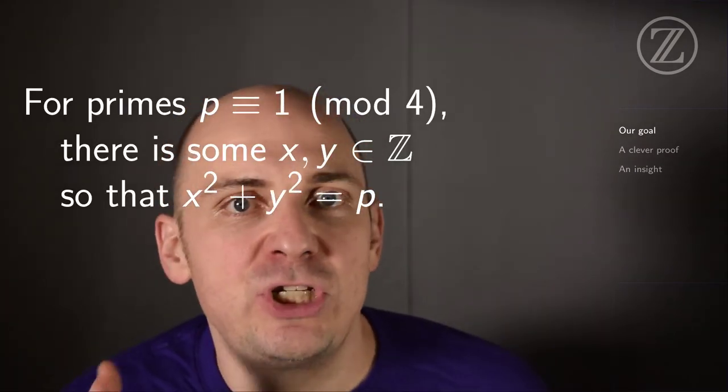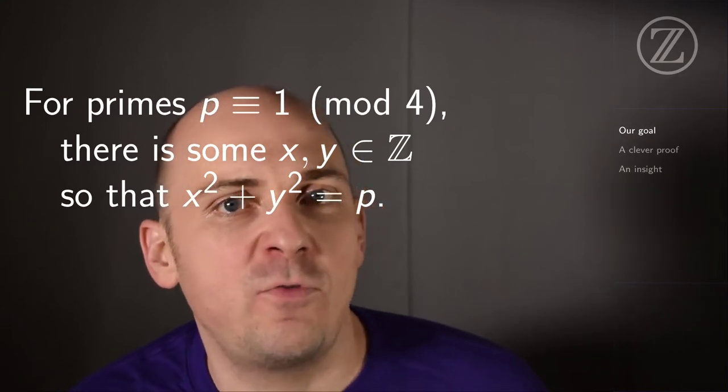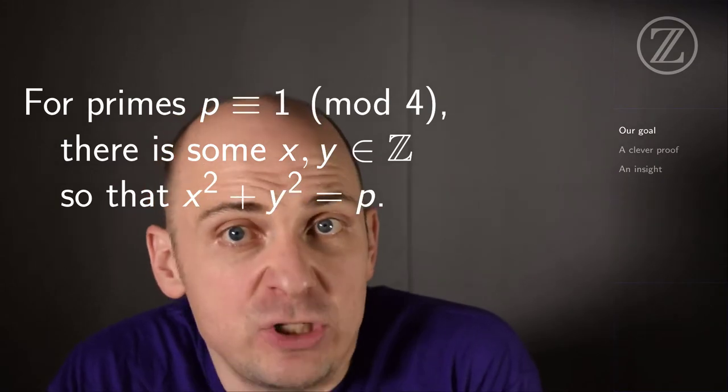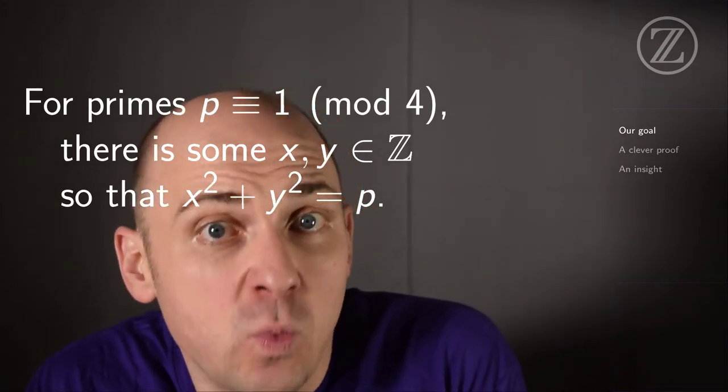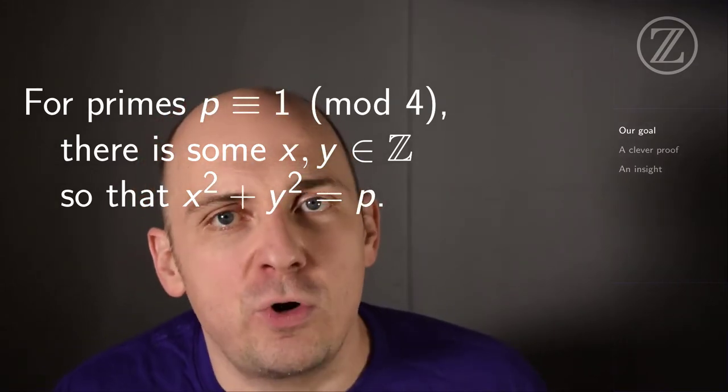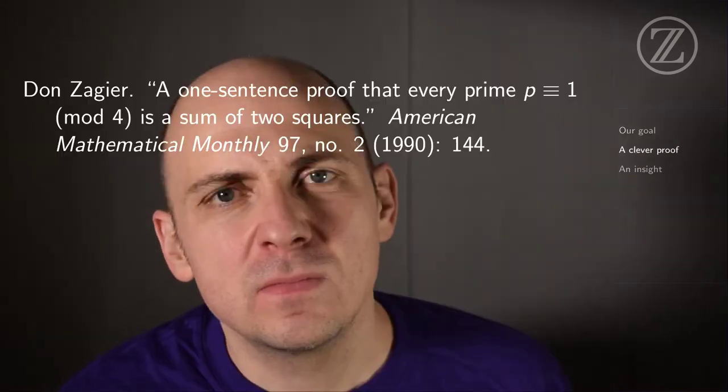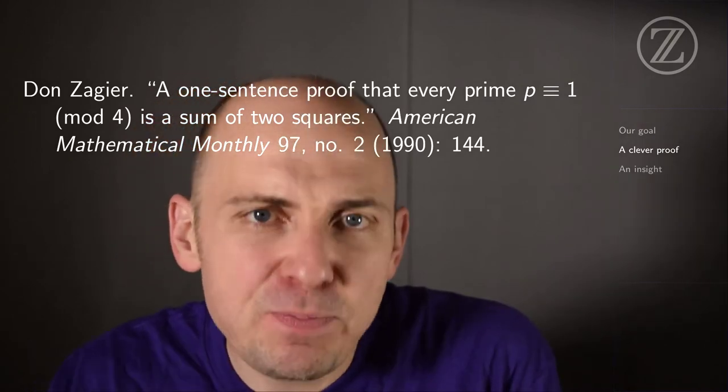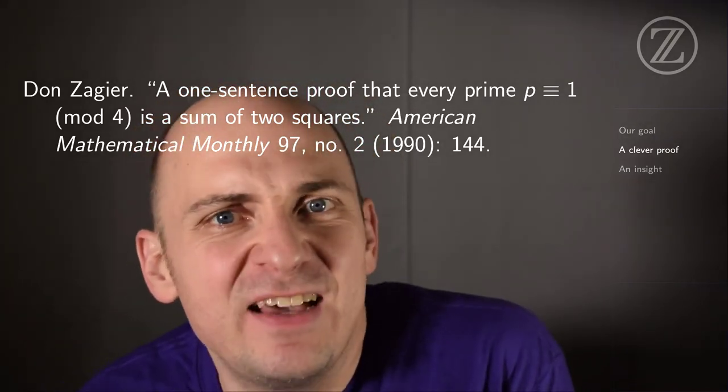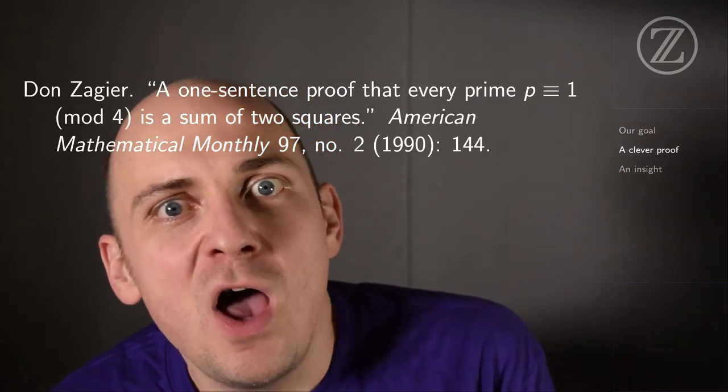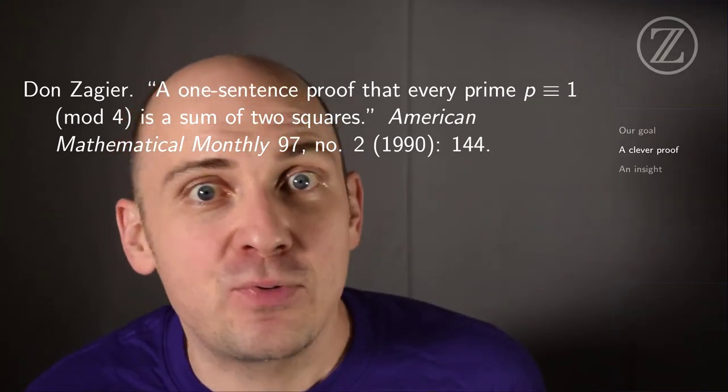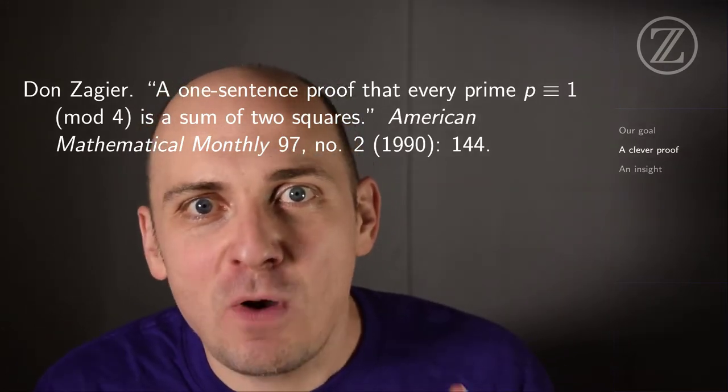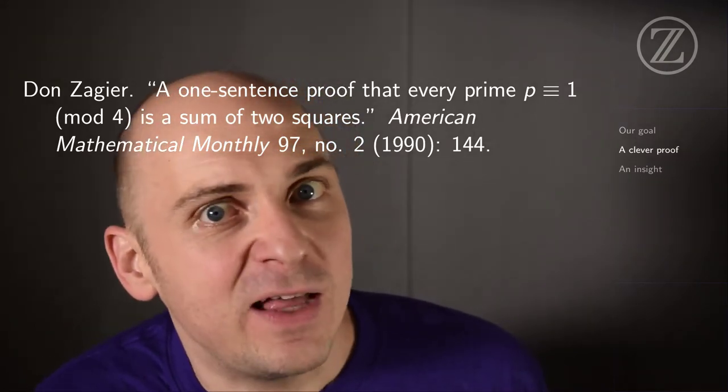So today, we're going to look at a particular problem. We'll show that for primes p congruent to 1 mod 4, there are integers x and y, so that x squared plus y squared equals p. In other words, primes 1 mod 4 are sums of two squares. The proof we'll see is an extremely clever proof by Don Zagier. Now, you can find this proof in the hilariously titled article, A One-Sentence Proof That Every Prime 1 mod 4 is a Sum of Two Squares. It's really quite a short journal article, just one page. And the argument is really quite clever.